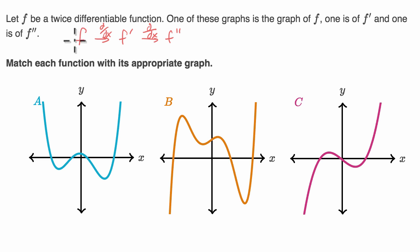So whatever degree polynomial this is, if it is a polynomial, this will be a lower degree, and then this would be an even lower degree polynomial. So let's see if we can make sense of these graphs using that lens.